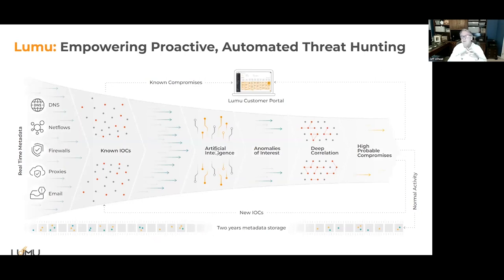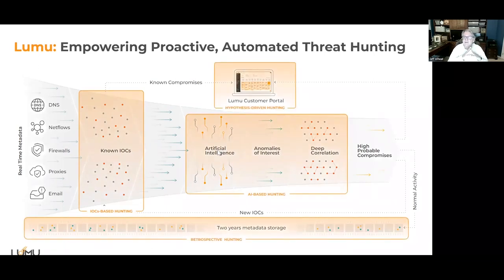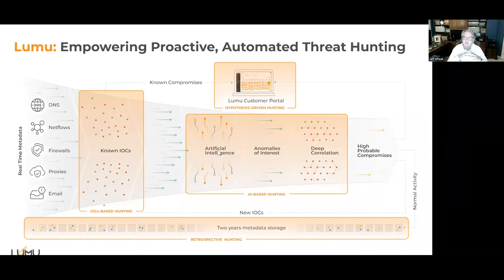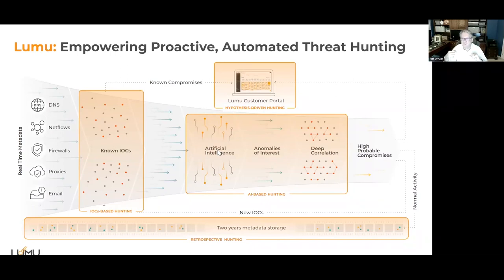I'm going to step you through how we automate this threat hunting and response, overlaying the hunting methods we talked about earlier. First, metadata is key — everything comes in through the network. The crown jewels of understanding what's going on is the metadata in your network, which we get through your DNS logs, firewalls, proxies, and syslogs. What we're looking for is any contact inside your network communicating out — that means you're compromised. We're not telling you what's hitting your firewall; we're telling you what got through your firewall and is communicating back out to the bad guys.